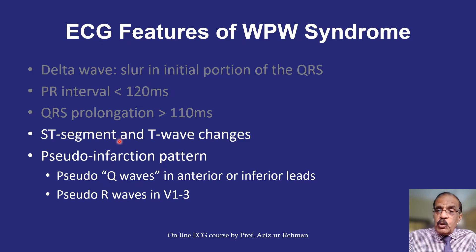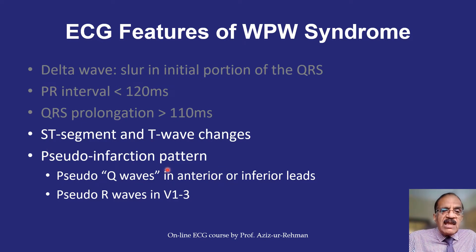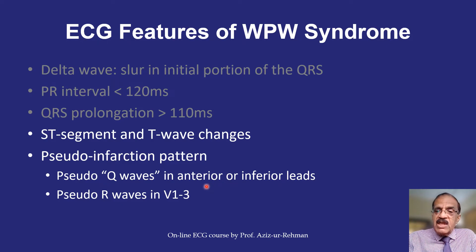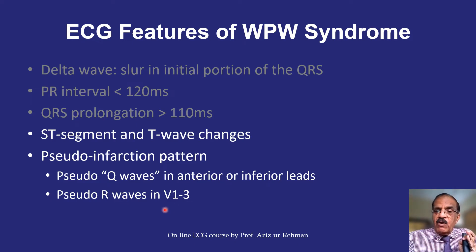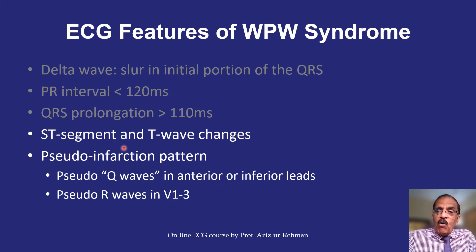ST segment and T wave changes can lead to misdiagnosis of ischemic heart disease and hypertrophy pattern. Very importantly, pre-excitation can produce a pseudo-infarction pattern. If the delta wave is downward, it mimics a Q wave — in anterior leads this can be falsely interpreted as anterior wall infarction; in inferior leads it can be confused with inferior wall infarction. If upward delta wave in V1 gives the impression of tall R wave, it can mimic posterior wall infarction. You could make a wrong diagnosis of myocardial infarction.